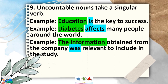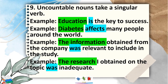More examples of Rule 9: 'The information obtained from the company was relevant to include in the study.' Information is uncountable, so it takes a singular verb: 'was.' Another: 'The research I obtained on the topic was inadequate.' The subject is 'research,' still an uncountable noun, therefore it takes a singular verb: 'was.'